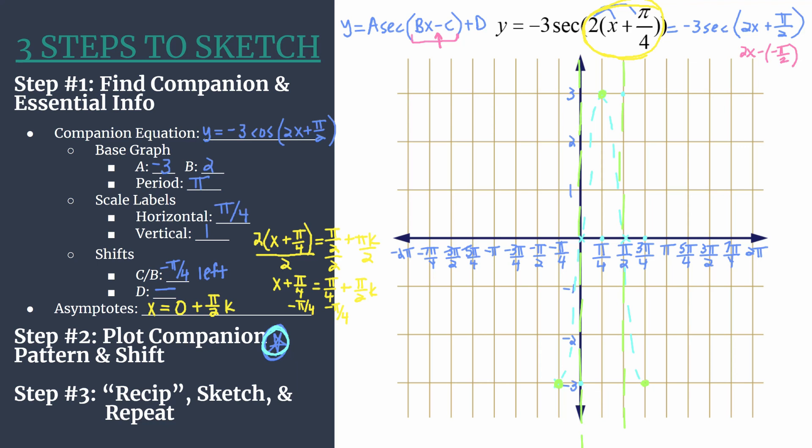Let's sketch in this curve here. So we have our secant curve, it's kind of a split curve. You have the curve that has the local minimum, and then you have another split secant curve, and that's just to show a sort of split cycle. So here we have it, one cycle of our graph, y equals negative three secant of two x plus pi over four.